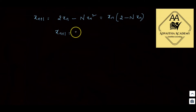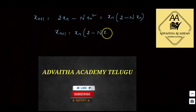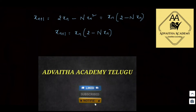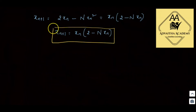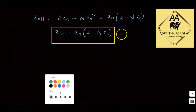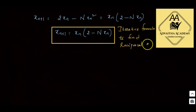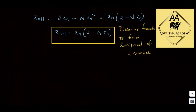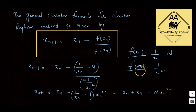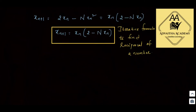So xn+1 is equal to xn into (2 minus n times xn). This is the iterative formula for finding the reciprocal of a number. By substituting f(x) and f'(x) into the basic Newton-Raphson formula, we obtained the iterative formula for reciprocal of a number.